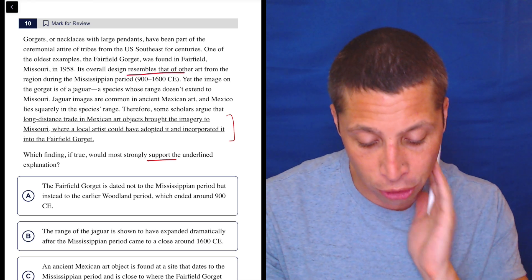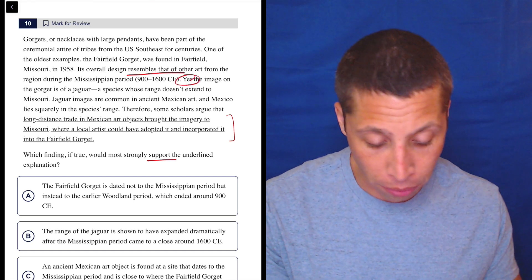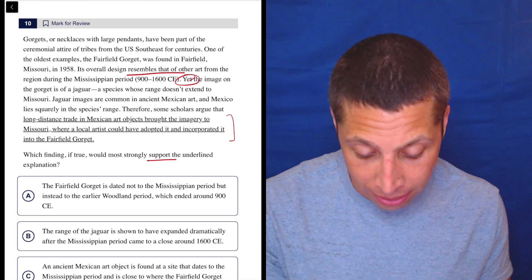Yet the images in the gorget is of a jaguar, a species whose range doesn't extend to Missouri. So yeah, it resembles other things, yet in some way it's weird, I guess.